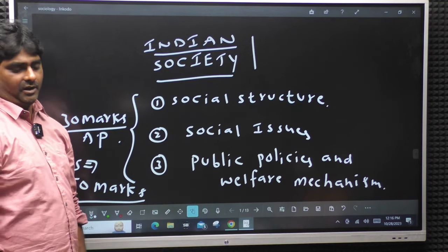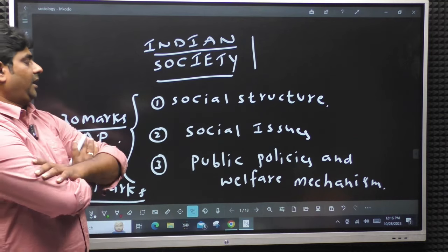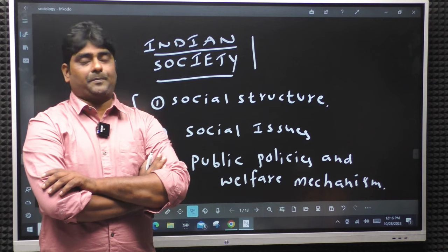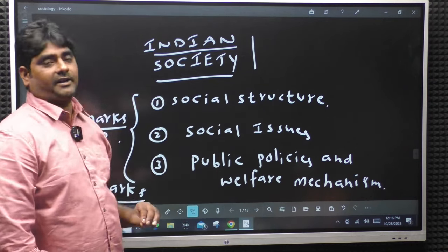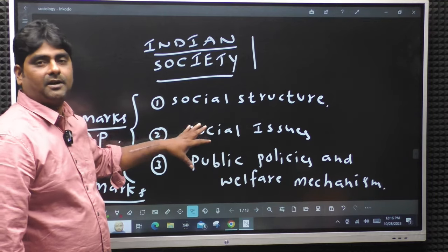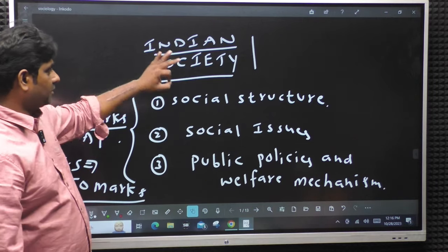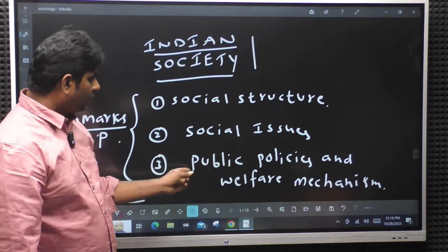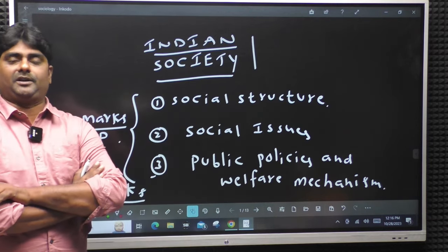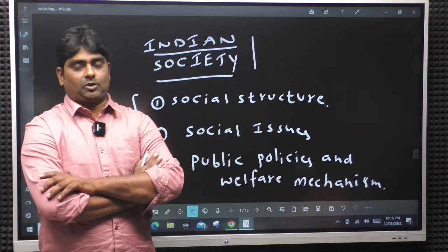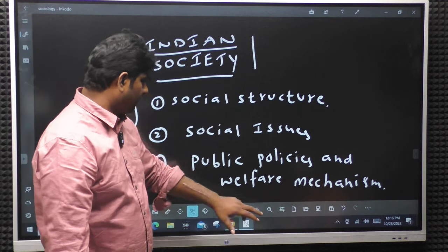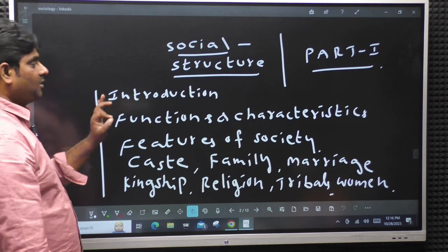This covers social issues in social structure, like public policies and welfare mechanisms of government - child, women, tribals, people. This is the same as Indian society. This third part of politics is linked. Part 1 is social structure - it is a wonderful, interesting thing.